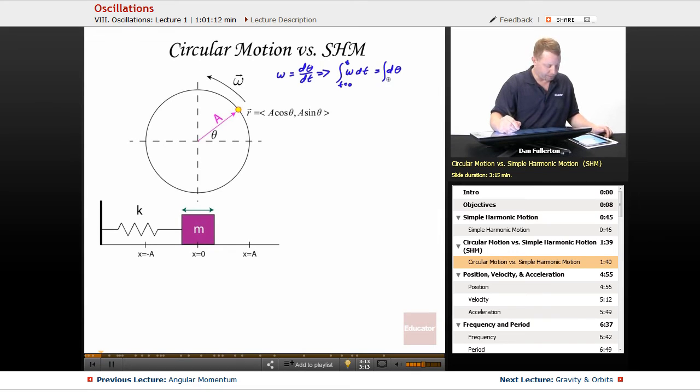And if I integrate both sides from some t equals 0 to some final time t, integral from theta equals 0 to some final theta, then that implies, well, angular velocity is constant in uniform circular motion. So the left-hand side becomes omega t and the right-hand side just becomes theta. So theta is given by omega t. That'll come in useful later.